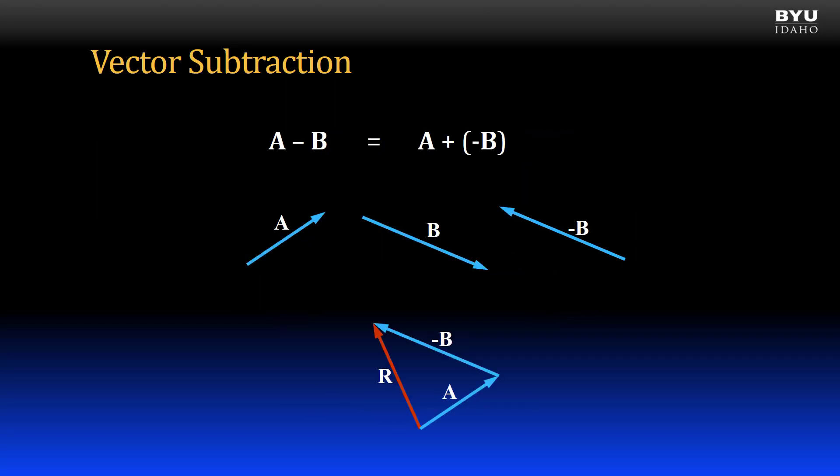Here's another principle of vector subtraction. If I take vector A minus vector B, or if I just change the sense of vector B and just add it, I will get the same result. So in other words, vector A minus vector B is equal to vector A plus negative vector B.